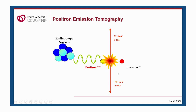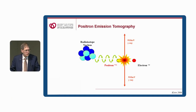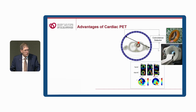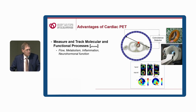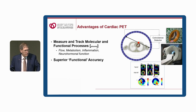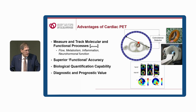Through Einstein's laws of physics, the two annihilate and emit two photons in equal and opposite directions. This beautiful physical principle is what allows PET to do what it does. By placing detectors in a ring on opposite sides, we can precisely localize where the event occurred using these coincidence photons, allowing us to measure and track molecular function at a picomolar level with superior functional accuracy for biological quantification.